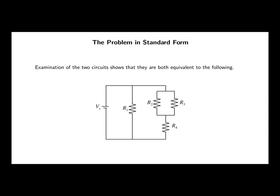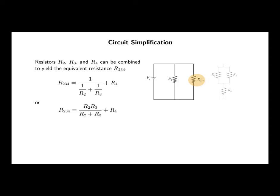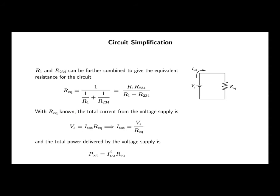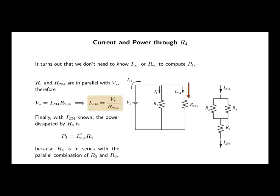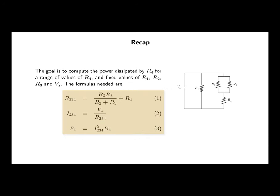We reorganize the diagram a little bit so that it's easier to recognize, and then we proceed to simplify. We create equivalent resistances and find the total current through the system. We find the total current through one of the branches, R2,3,4. From that, we calculate the power in resistor 4: I2,3,4 squared times R4. These three formulas will be used in the spreadsheet. The point is not to do the detailed analysis here — we presume we've already done the analysis and now want to find how the power in resistor 4 varies with resistance.